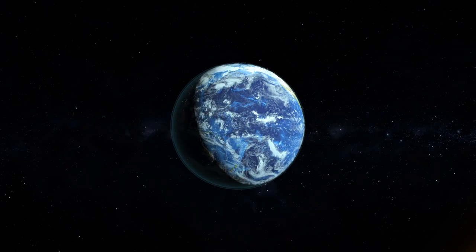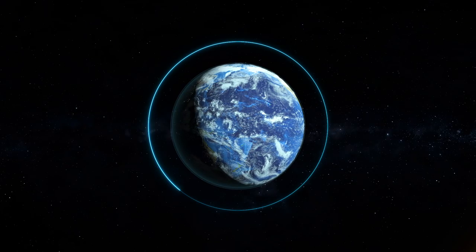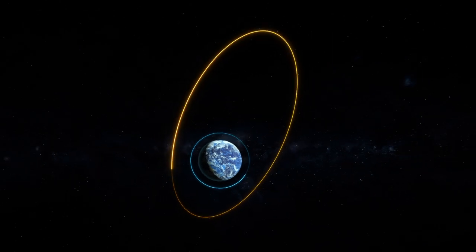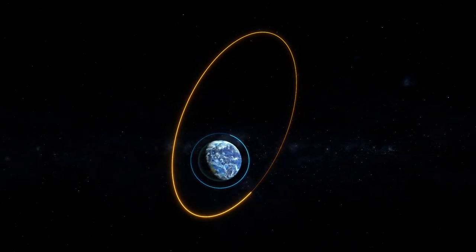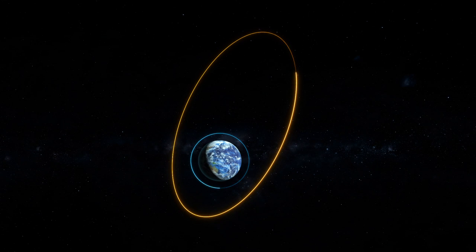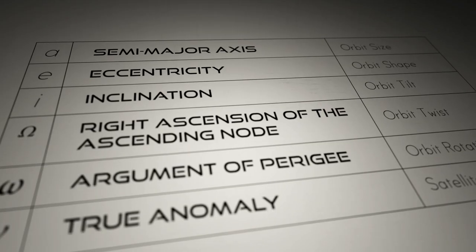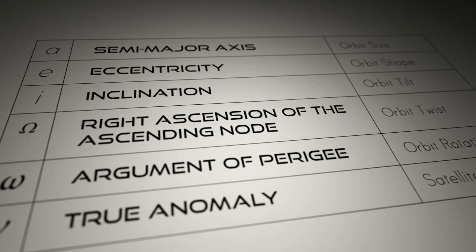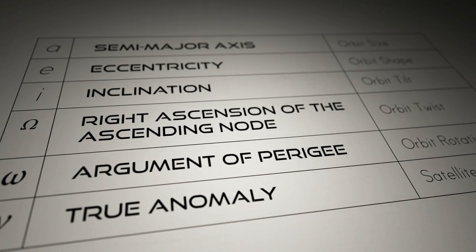Orbits come in all shapes and sizes. Some are small and circular, others are quite large and highly elliptical. Despite these differences, we can define an orbit by its orbital elements. The COEs describe orbit size, orbit shape, orbit tilt, orbit twist, orbit rotation, and a satellite's location. This table lists each of the COEs and relates them to their effect on the orbit geometry.